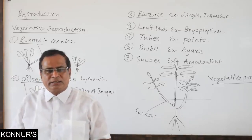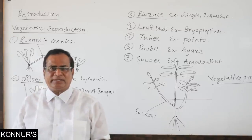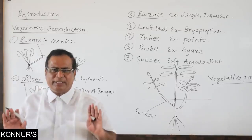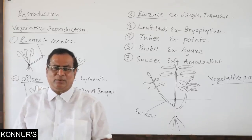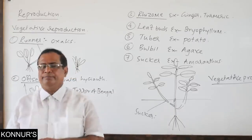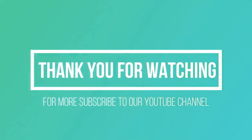In most animals, the only type of reproduction is sexual reproduction. In all unicellular organisms, asexual reproduction is the mode. In higher plants, both asexual and sexual reproduction occur. In most animals, only sexual reproduction is present. We will discuss sexual reproduction next.